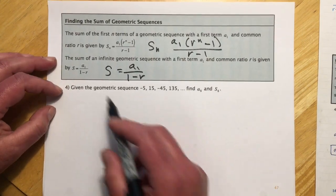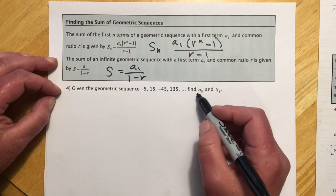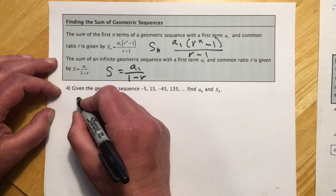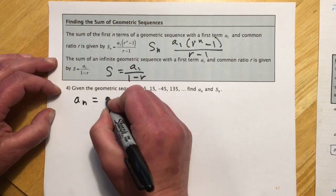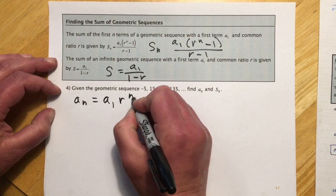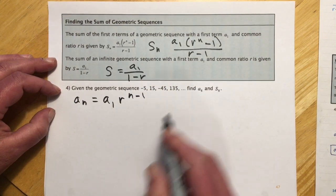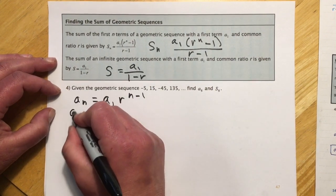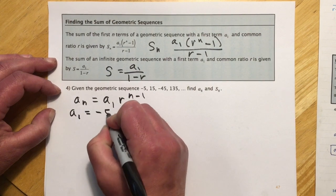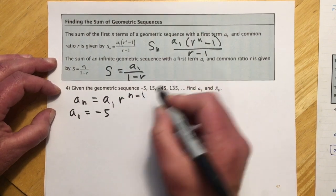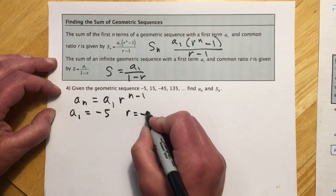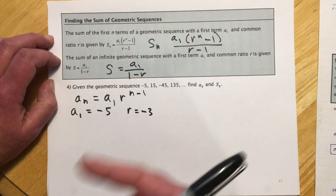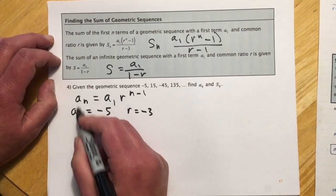So back to number 4 proper. Given the geometric sequence, find the eighth term and the sum through the first eight terms. And so remember our formula for the nth term is this. And so we're given the first term. I can find the common ratio pretty easily. The first term a sub 1 is negative 5. And the ratio is going to be 15 over negative 5, so the ratio is negative 3. And then I can just plug right in here, and also I know n is 8.